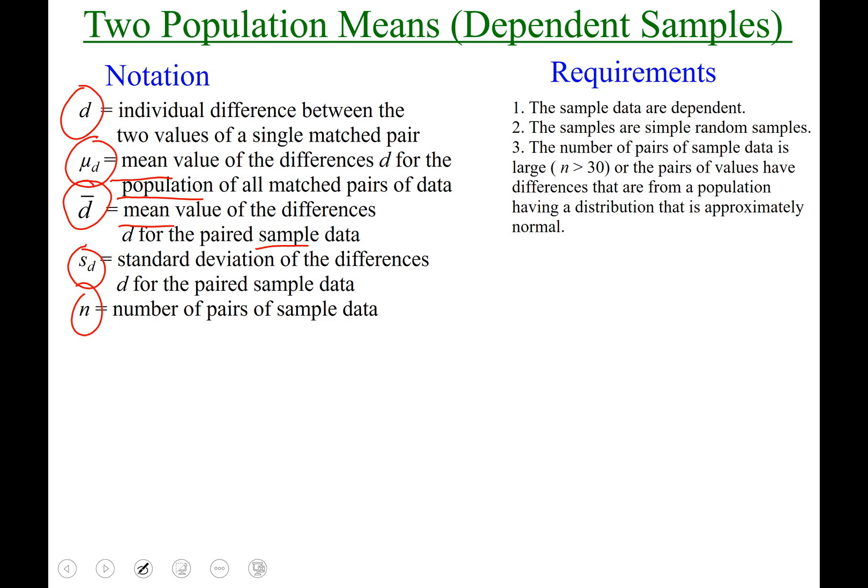Requirements. Sample data are dependent. Simple random samples. Everything's greater than 30, and our population needs to be approximately normal.